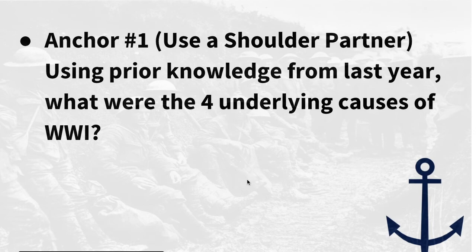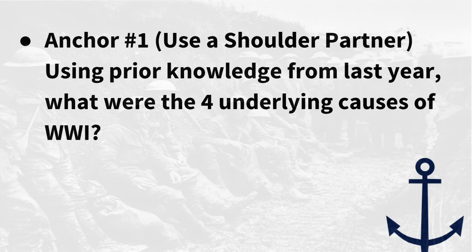Here is your first anchor. Anchor number one. Using prior knowledge from last year, what were the four underlying causes of World War I? This is a good spot to pause the video and think about your answer. The four major causes were nationalism, imperialism, militarism, and alliances. These four causes were something that you should have learned in world history, whether it was a regular world history or an AP world history class.